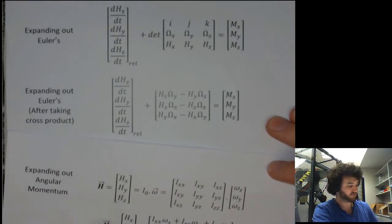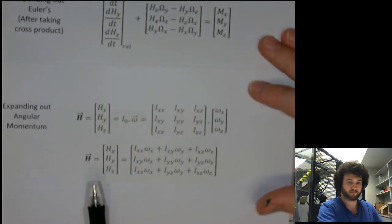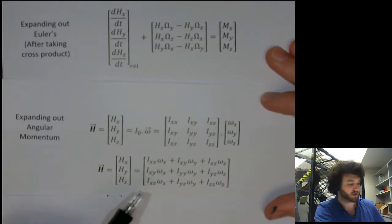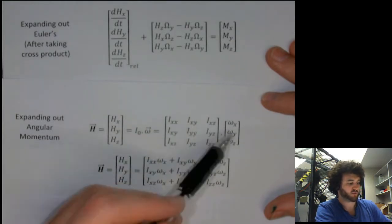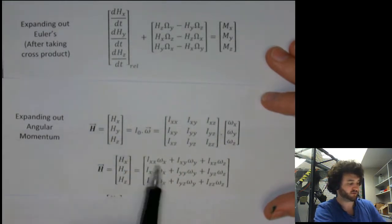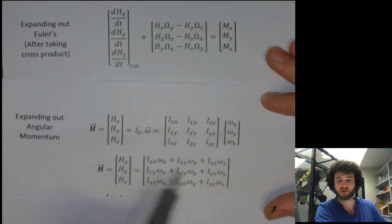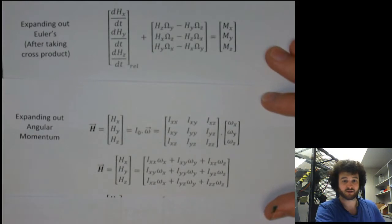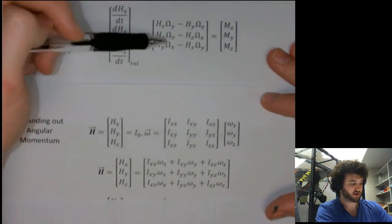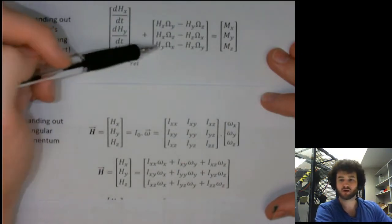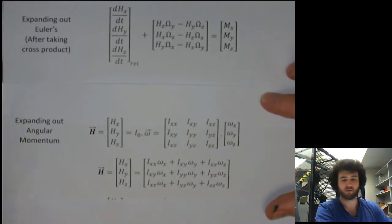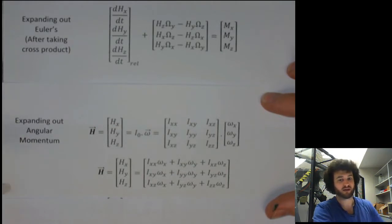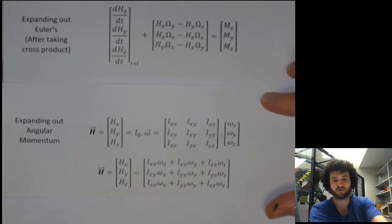Performing this matrix multiplication, we get: I_xx times omega_x, I_xy times omega_y, I_xz times omega_z for the first row, and so on for the second and third rows. If we substitute these back into Euler's equations — hx back into hx, hy into hy — we get a complicated expression relating the inertial terms and angular velocities to the moments acting on the system. In the real world, calculations of this complexity are best done with a computer to avoid arithmetic mistakes.